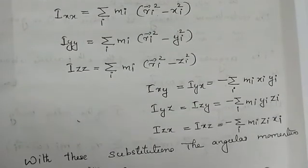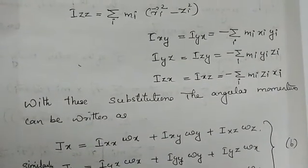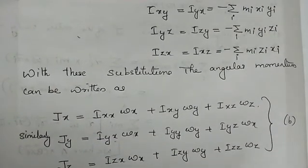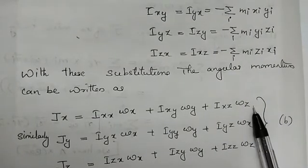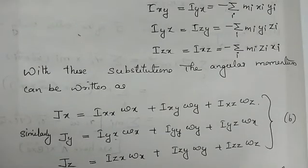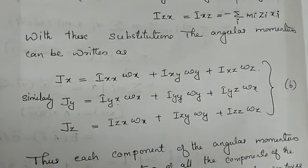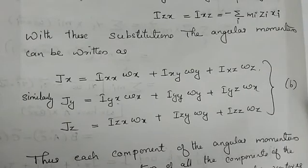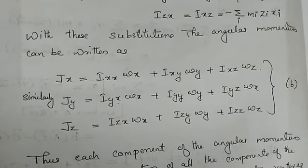With these substitutions, the angular momentum components can be written as: J_x equal to I_xx omega_x plus I_xy omega_y plus I_xz omega_z. Similarly, J_y equal to I_yx omega_x plus I_yy omega_y plus I_yz omega_z. And J_z equal to I_zx omega_x plus I_zy omega_y plus I_zz omega_z. This is equation B.